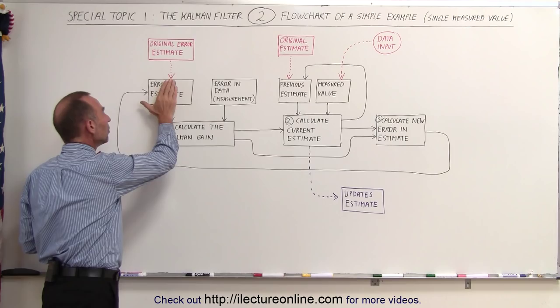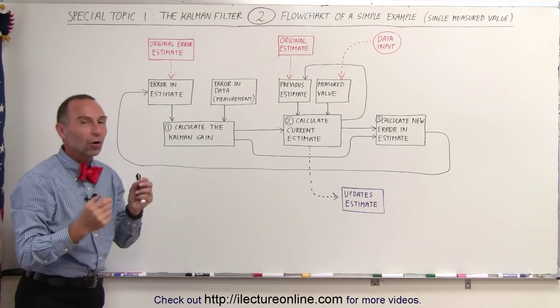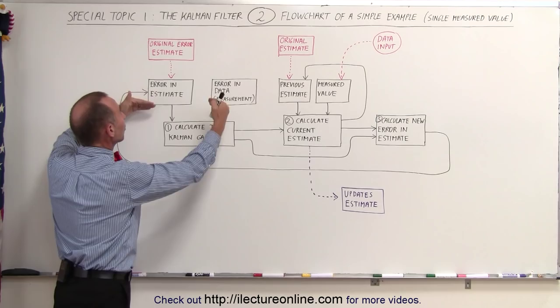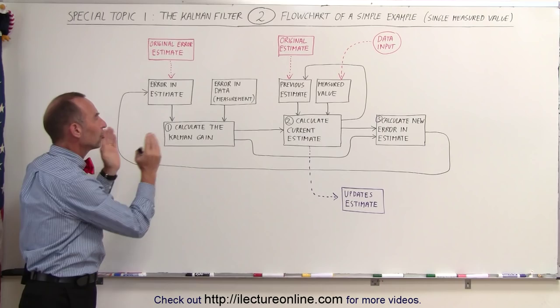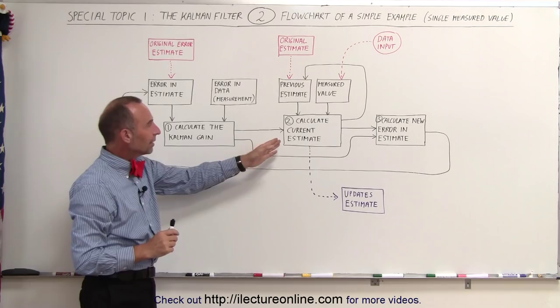What the gain really does is put a relative importance on the error in the estimate versus the error in the data. If the error in the estimate is smaller, we put more importance in it. If the error in the data is small, we put more importance in that. What feeds the ultimate recalculation depends on how much we can trust the estimate and the data — how big those errors are. In the next video I'll show you more detail of how the Kalman gain handles the relative error in the estimate and in the data.